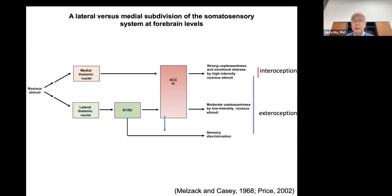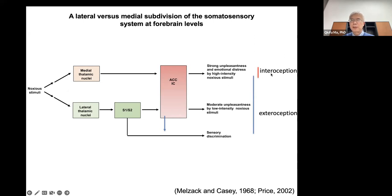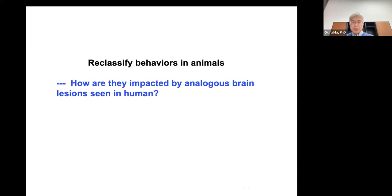With the lateral pathway governing exteroception — sensory discrimination and defensive or reflexive behavior — and the medial pathway governing sensing of body integrity disruption and tonic pain, we want to reclassify animal behavior using brain or spinal lesions to see how those behaviors are impacted. The first set of behaviors I want to mention — familiar to everyone in the pain field — is the spinal reflex withdrawal response, where we measure the lowest mechanical or thermal threshold to cause a hindpaw withdrawal.